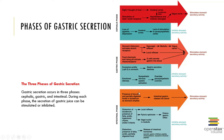The intestinal phase accounts for about 5 to 10% of gastric secretion. At this stage, the duodenum responds to the arriving chyme and moderates the gastric activity through hormones of the endocrine system and nerve impulses of the nervous system. The duodenum of the small intestine initially enhances gastric secretion, and then starts to inhibit it.